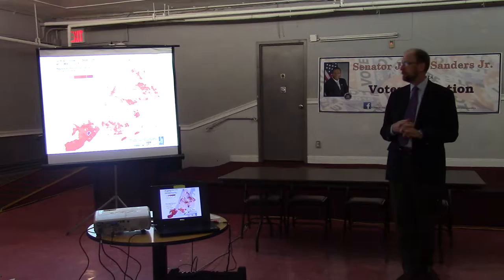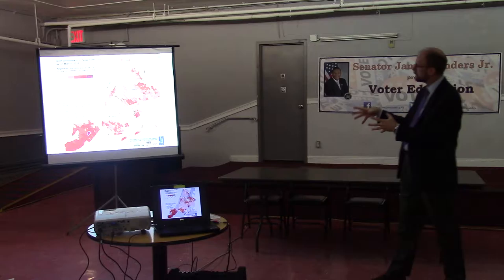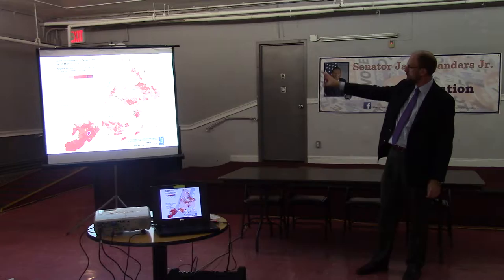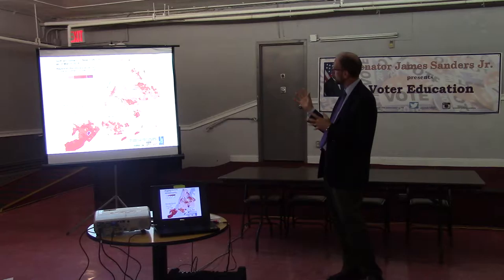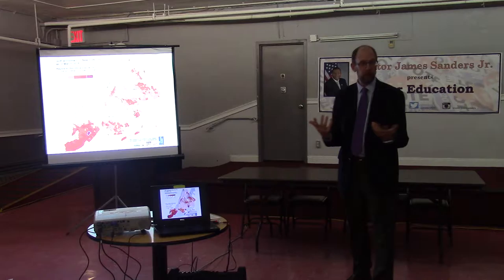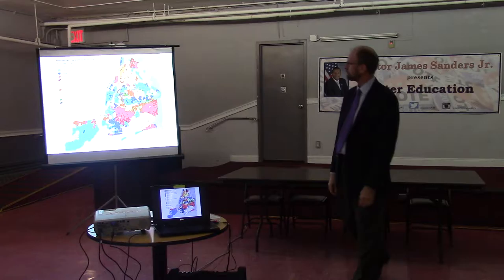The next slide is almost a mirror image of that — where registered Republicans are. It's interesting that there are registered Republicans all over the city. Most of the concentration, though, is in Staten Island, southern Brooklyn, parts of Queens — not southeast Queens where we are now, not upper Manhattan or much of the Bronx. And I'll show you a map later of who voted for Donald Trump in the primary, so you can see how closely that follows that map.